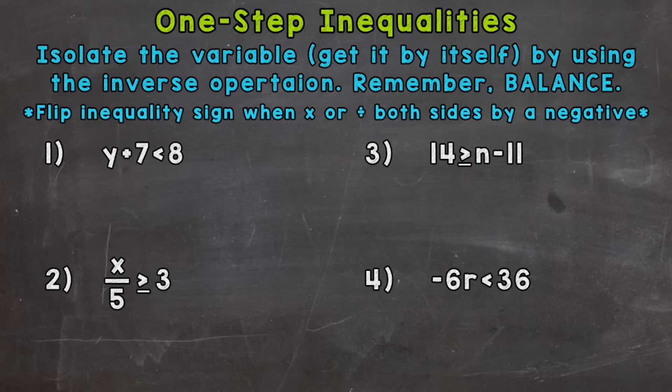Let's jump into number one, where we have y plus seven is less than eight. We need to isolate our variable y. We're adding seven to y, so the opposite would be to subtract seven. Let's subtract seven from that side — that's going to cancel those sevens out and isolate our y. Whatever we do to one side, we have to do to the other, so if we subtracted seven on the left, we need to subtract seven on the right. We end up with y is less than eight minus seven, which is one.